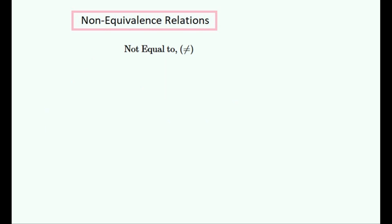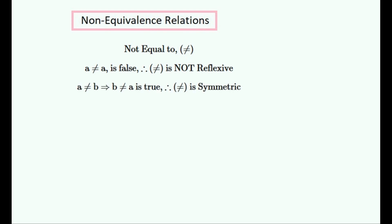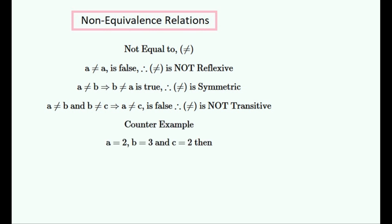Now to study the not-equal-to relation. It is never reflexive by its definition, but it is always symmetric. It is not transitive because A could equal C and both be unequal to B. Look at this counter-example — it satisfies the first two conditions while failing the third. This is an example of a relation that is symmetric and not transitive.